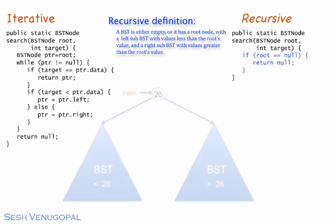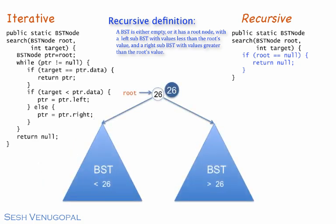If the root is not null, we check the data in the root, comparing it against the target. If they match, we return the root reference. This is the other termination condition. We don't need to recurse any further down the tree.